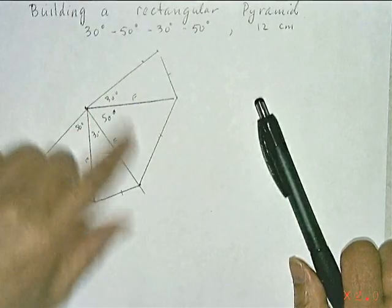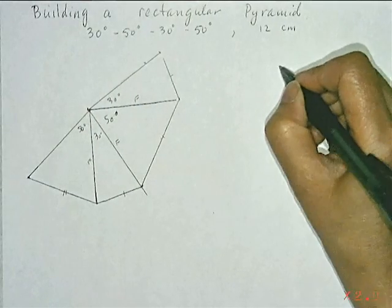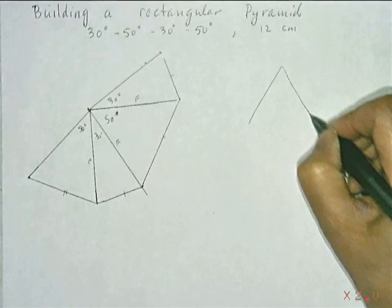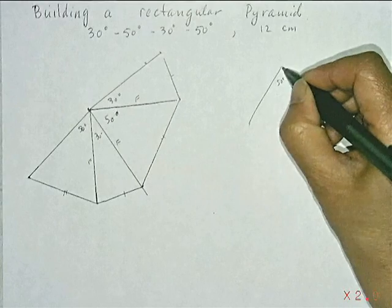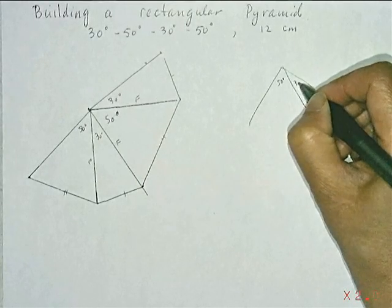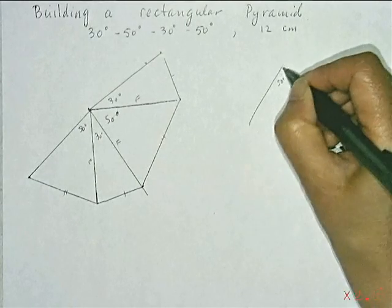Then you are going to fold along here and make a pyramid. So your pyramid if I could just do a sketch and pretend would be a 50 degree angle here. It will have a 30 degree angle here. Another 30 degree angle here. Another 30 degree on that side.